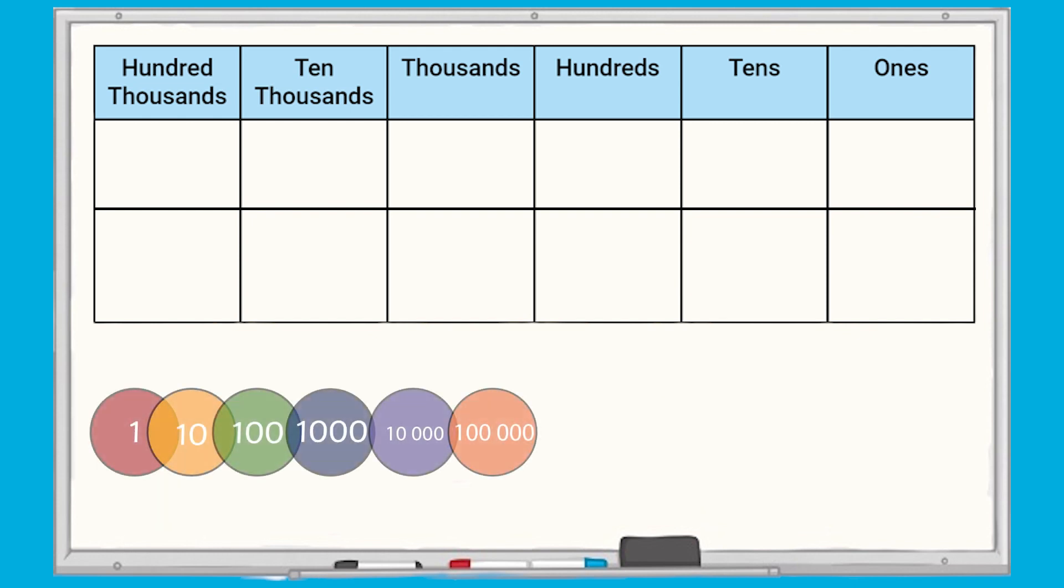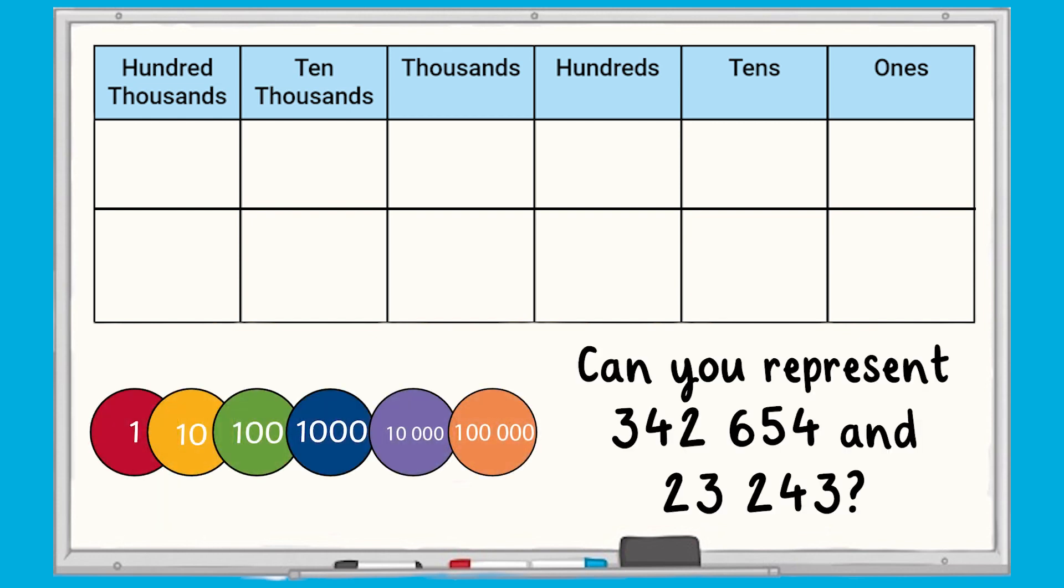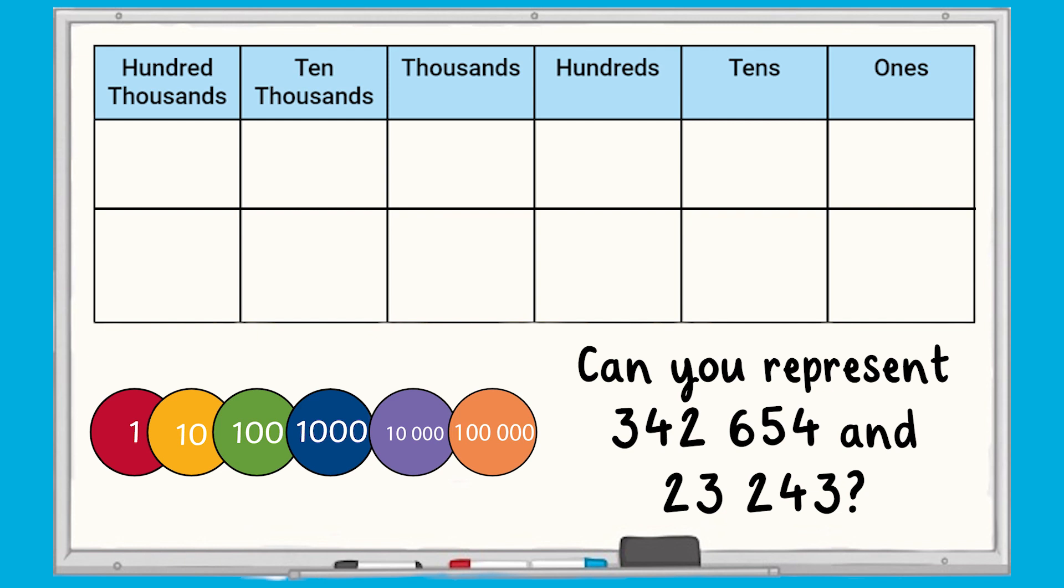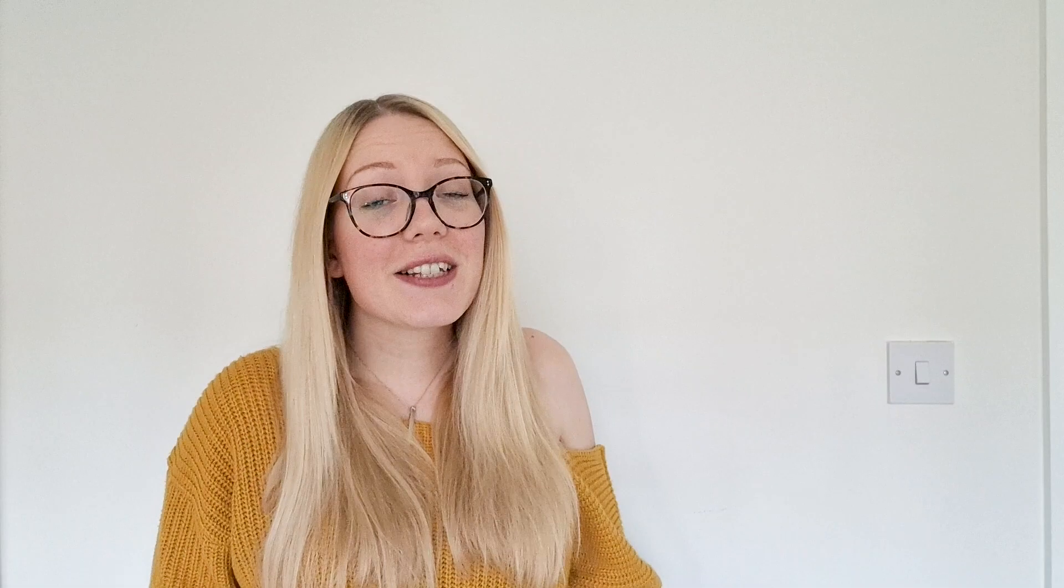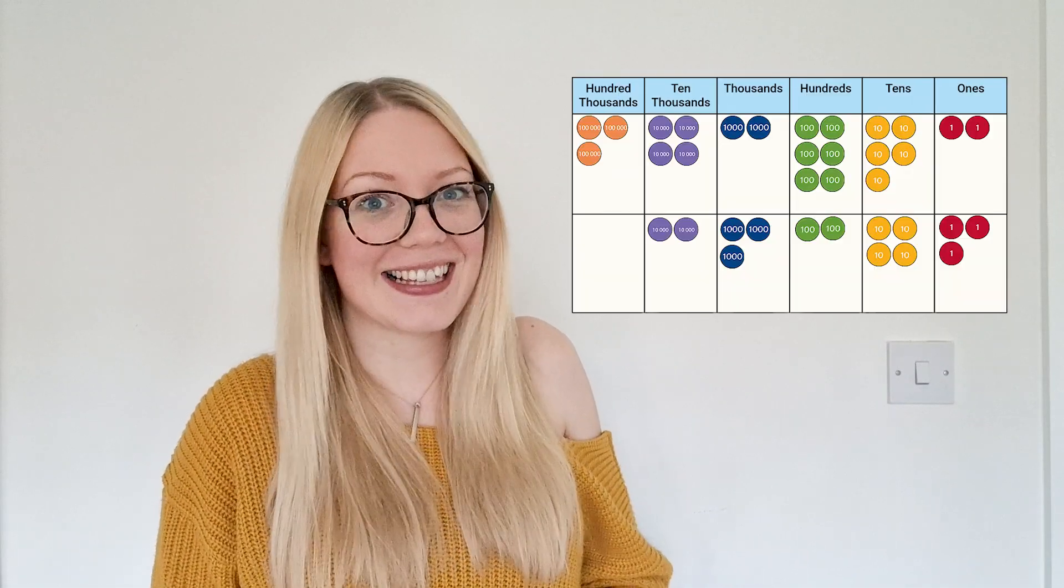Using a place value chart and some place value counters, can you represent 342,654 and 23,243? Your place value chart should look something like this now.